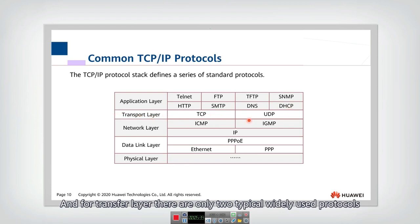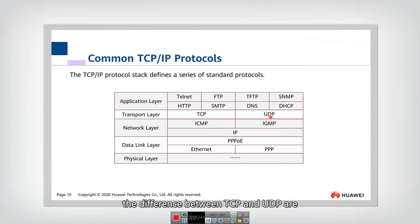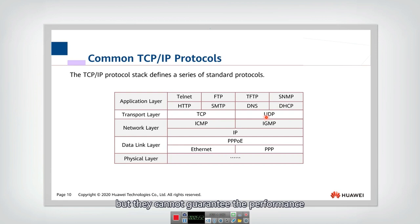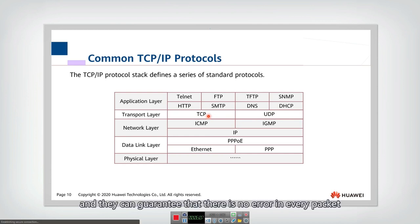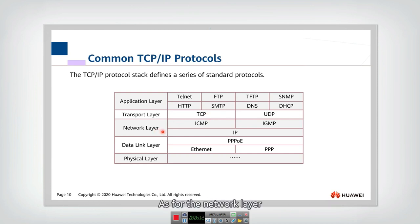For the transport layer, there are two widely used protocols: TCP and UDP. UDP only provides transmission but cannot guarantee performance. In contrast, TCP provides reliable data transfer from sender to receiver — guaranteeing the sequence of each packet and ensuring there are no errors in every packet. As for the network layer, all network devices need to run the IP protocol.